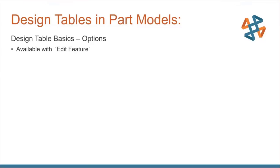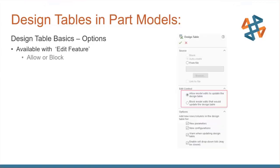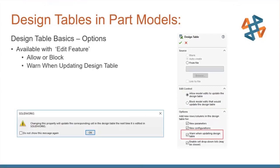In the design table options — what I refer to as a bi-directional versus unidirectional design table — you can set Allow Model Edits to Update the Design Table. Any dimension you change will trigger a warning message and populate the appropriate cell in the design table. I recommend keeping that warning on so you don't accidentally change a dimension without understanding the repercussions of updating that design table parameter. You can also Warn When Updating the Design Table, or simply block those edits — and you can change this setting as many times as needed.